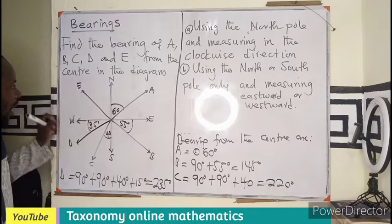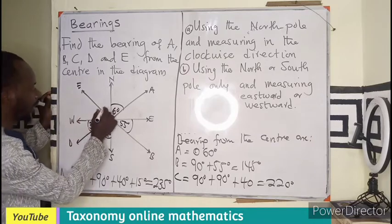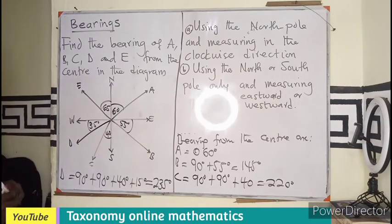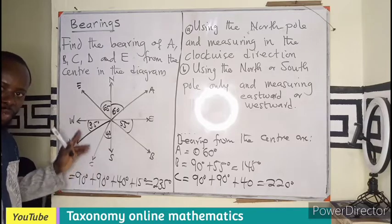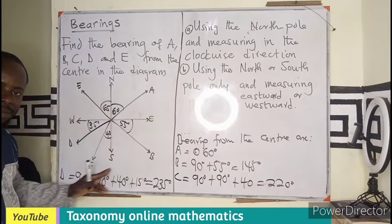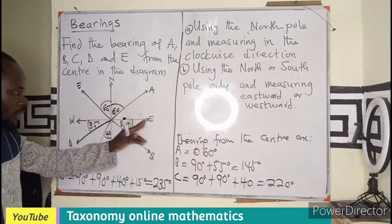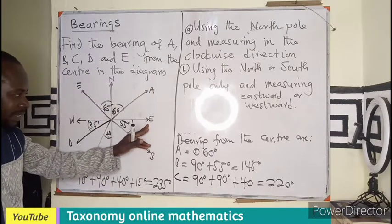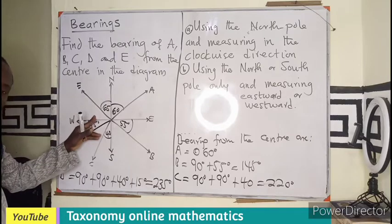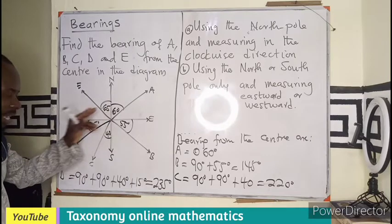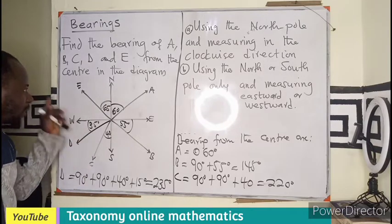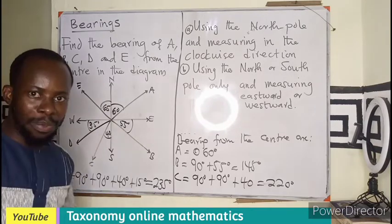This is a 65-degree angle. With this explanation, you should be able to find the bearing of E from the center. From north to east is 90, east to south is 90, south to west is 90, and this last segment must also give 90. I believe you know what bearing you are going to have for E. If you know the answer, hit me up in the comment section.